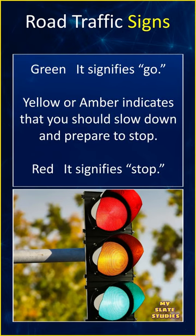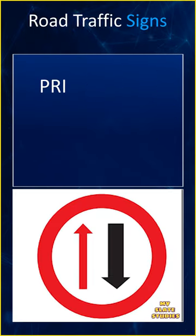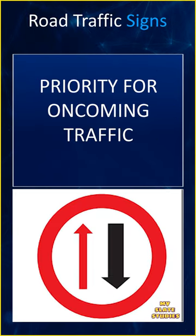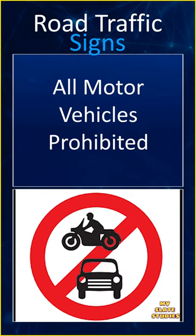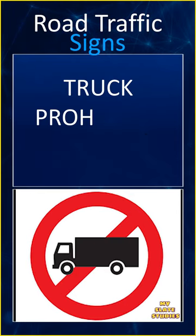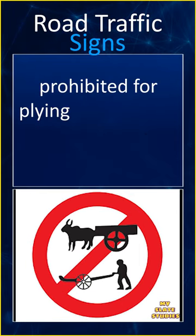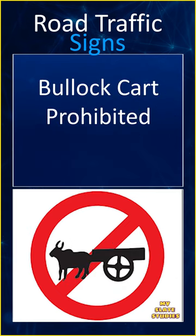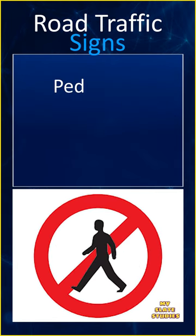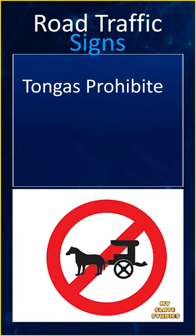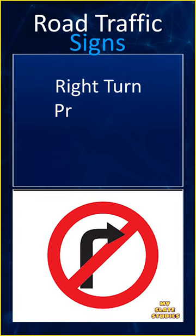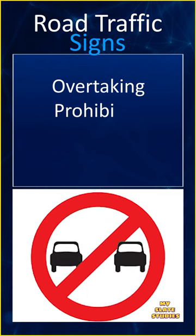Road traffic signs: no entry, priority for oncoming traffic, all motor vehicles prohibited, truck prohibited, prohibited for bullock and hand carts, bullock cart prohibited, cycle prohibited, pedestrian prohibited, tongas prohibited, right turn prohibited, left turn prohibited, U-turn prohibited, overtaking prohibited.